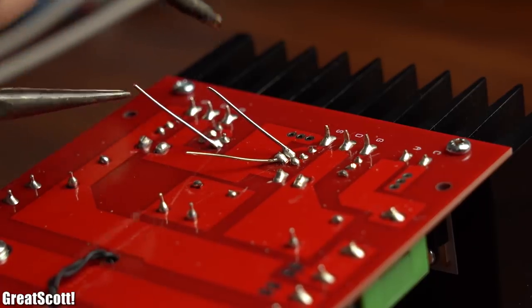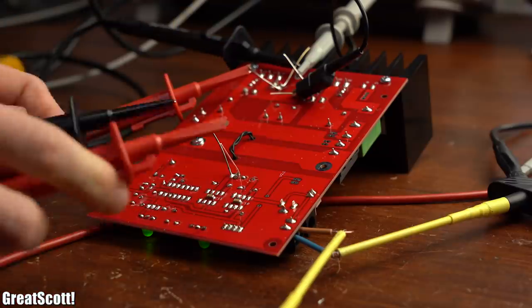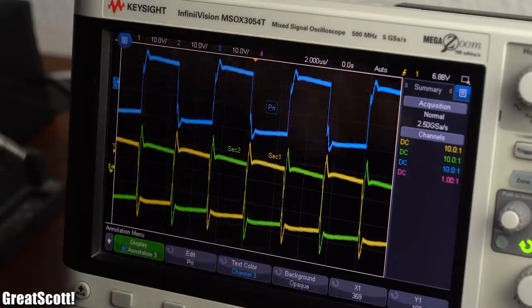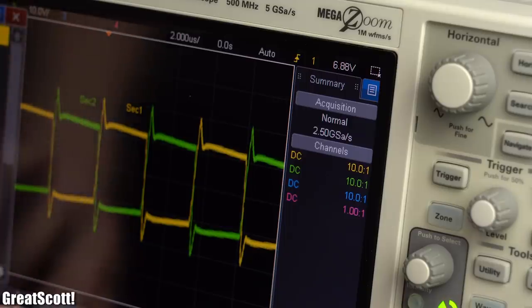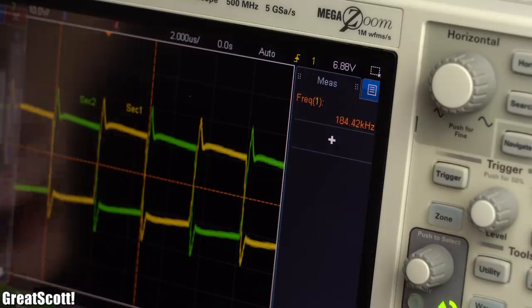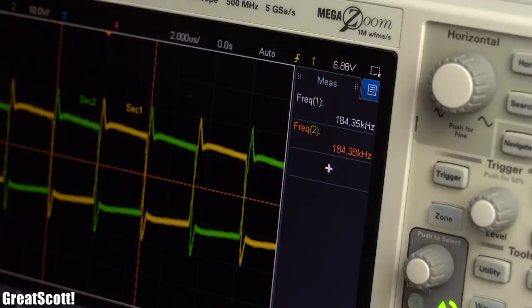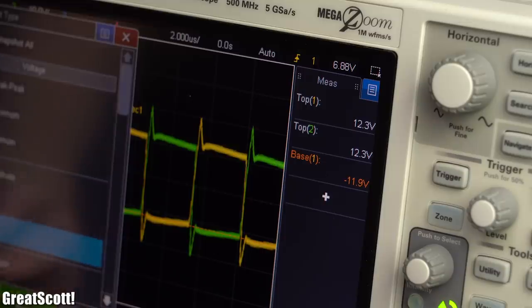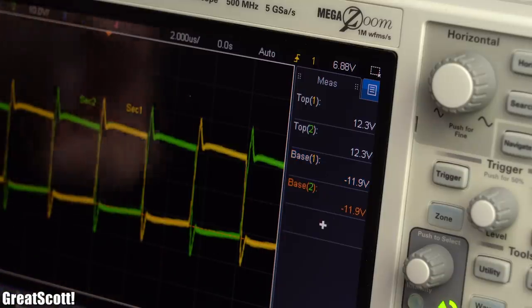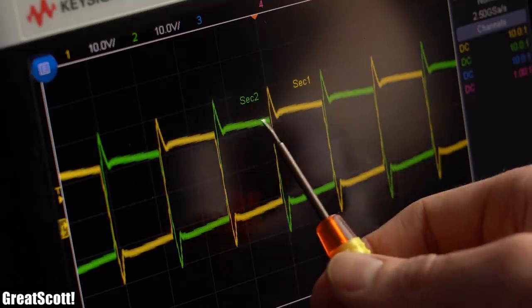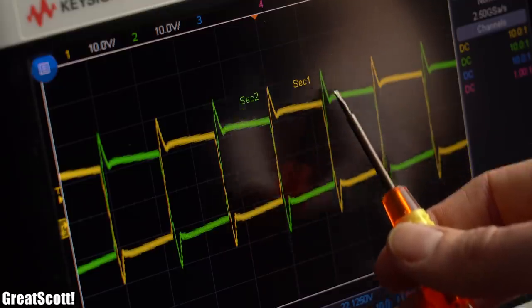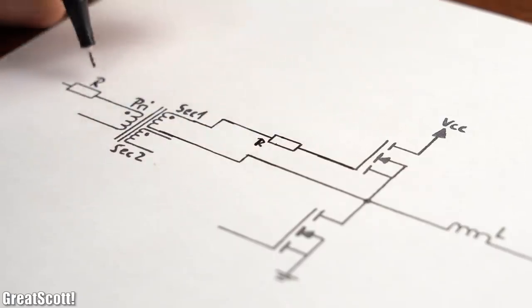But enough already of the theory, why don't we just have a look at the voltages of the primary and secondary sides of the gate drive transformer on the oscilloscope. Now we can easily see that the secondary side voltages come with a frequency of 184kHz as well as with high enough amplitudes in order to switch the MOSFET without any problems, perfect!